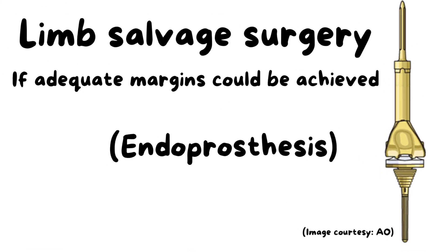Limb salvage surgery is performed when negative margins can be achieved and the tumor is resectable. Endoprostheses or implants are used to fill the gap or void created by resecting the tumor, giving the patient a functional limb.